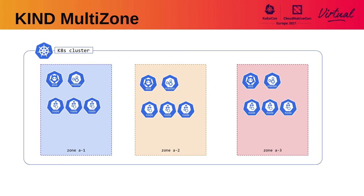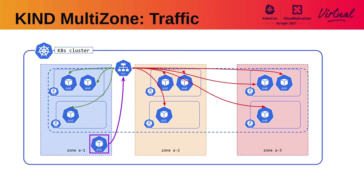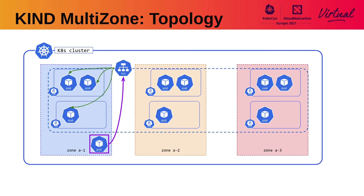For our last example, we are going to simulate a multi-zone scenario and demonstrate a new feature to be released in Kubernetes 1.21 called topology-aware hints. Users are deploying more multi-zone scenarios to improve cluster resilience, but the current implementation of services doesn't provide a good way to keep traffic within a zone — it is usually spread all over the cluster. However, users may want to give zone affinity to improve performance and reduce costs. This new feature adds a new field to endpoint slices to provide topology information so kube-proxy or other service implementations can use it to implement service affinity to the zone.